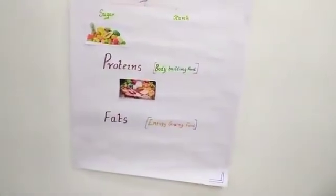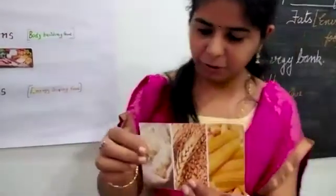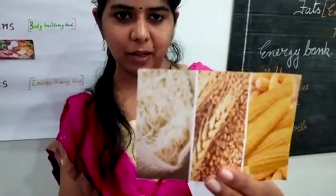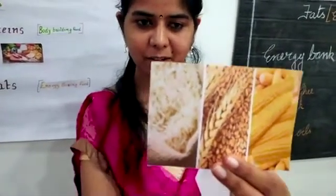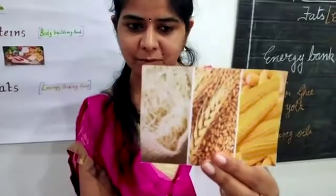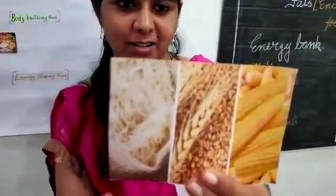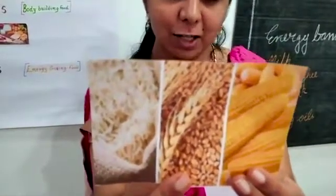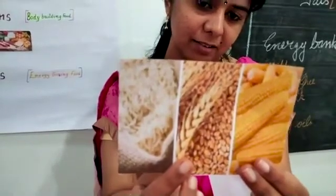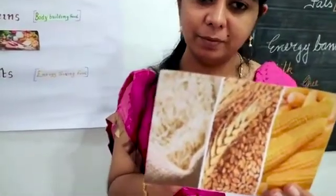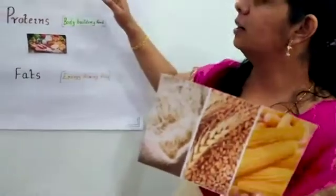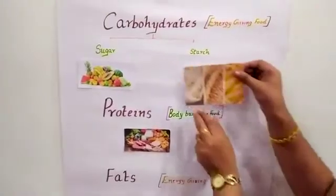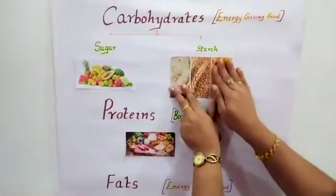Next one — just observe it. The first one is our staple food, our main food item: rice. Next you can see wheat, then corn or maize. What is it coming under? It is also energy-giving food. It is a starch-rich food, coming under starch. So we are going to stick it here under starch.